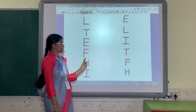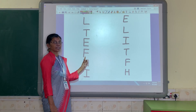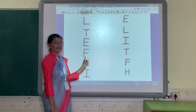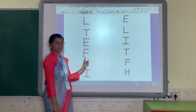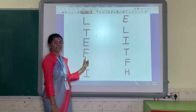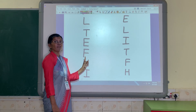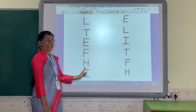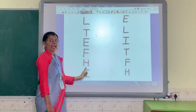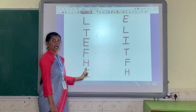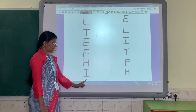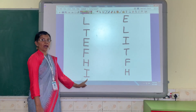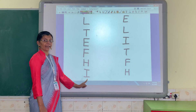Now what is this? Come on, say. Yes, correct. This is the F letter. F is F. Then this is H. H. And I. I is E.